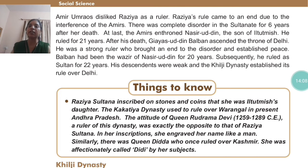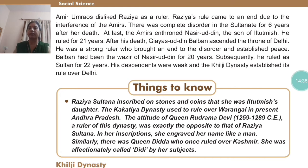Gyasuddin Balban was a ruler after Nasruddin and he brought order and peace to Delhi. Balban had been the wazir of Nasruddin for 20 years, and subsequently ruled as Sultan for 22 years. His descendants were weak, and the Khilji dynasty established its rule over Delhi.